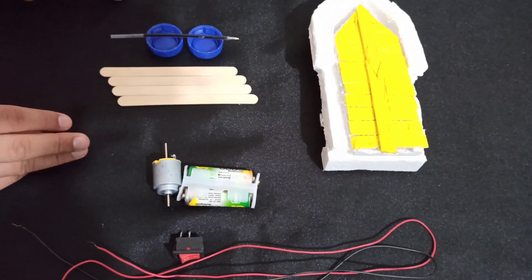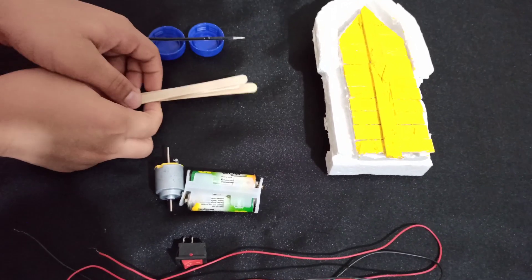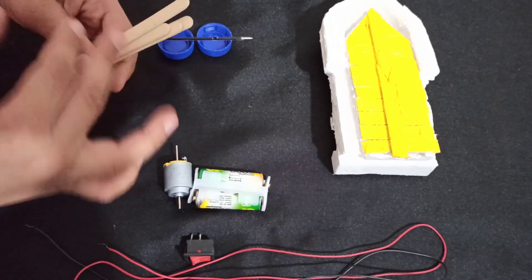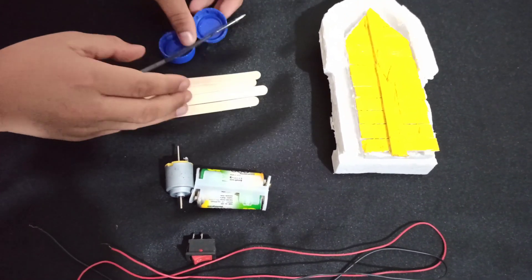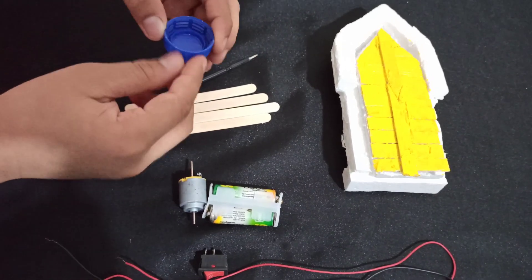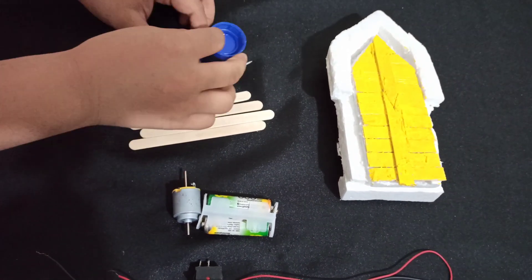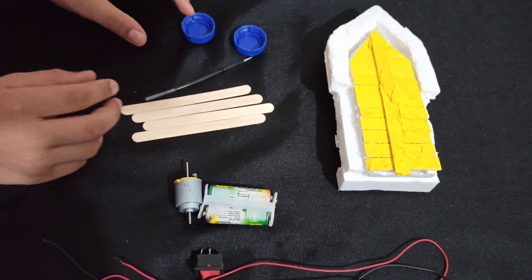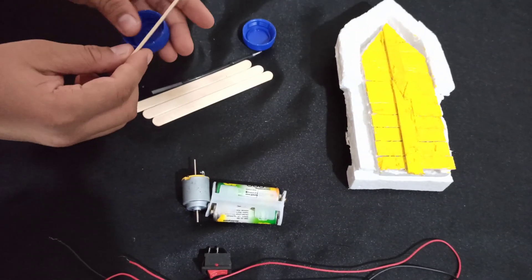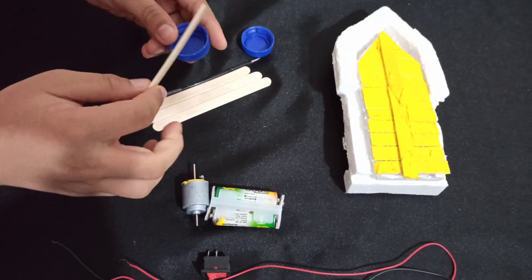To make our paddles, we should take our four ice cream sticks and cut them into halves. Then take our bottle caps and cut four slits into them. Do the same for the other bottle cap. Then take your ice cream sticks and insert them into the slits.